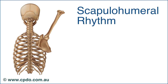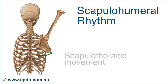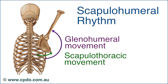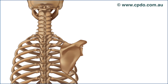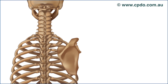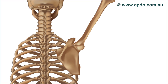Scapulohumeral rhythm is the coordinated movement of the scapula across the thoracic cage, called scapulothoracic movement, together with the movement of the humerus to the glenoid, or glenohumeral movement. Correct scapulohumeral rhythm is required to achieve full upper limb elevation. Scapular superior rotation upon the thorax tilts the glenoid fossa upwards, and this change in its orientation accentuates the movement occurring at the glenohumeral joint.